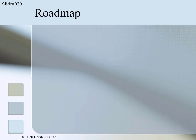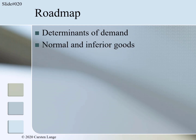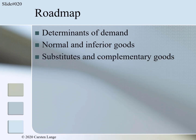In this segment we will learn about determinants of demand — in other words, what influences the quantity demanded by an individual or by a group. We will also learn about normal and inferior goods, as well as substitutes and complementary goods.